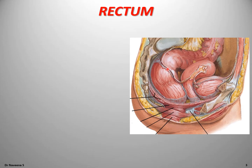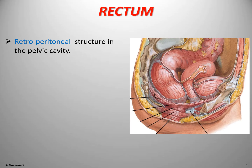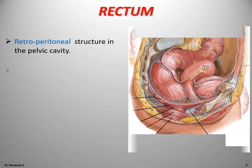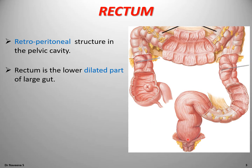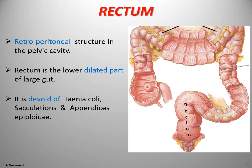The rectum is a retroperitoneal midline structure seen more posteriorly in the pelvic cavity. It is the lower dilated part of the large gut. It is devoid of taeniae coli, sacculations, and appendices epiploicae, which are the characteristic features of the colon. They are absent in the rectum.